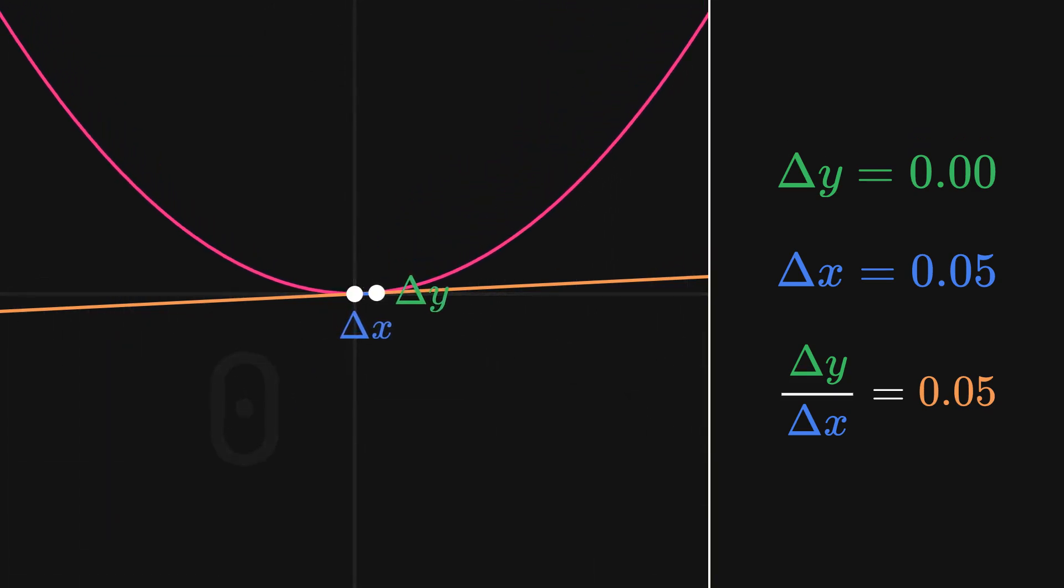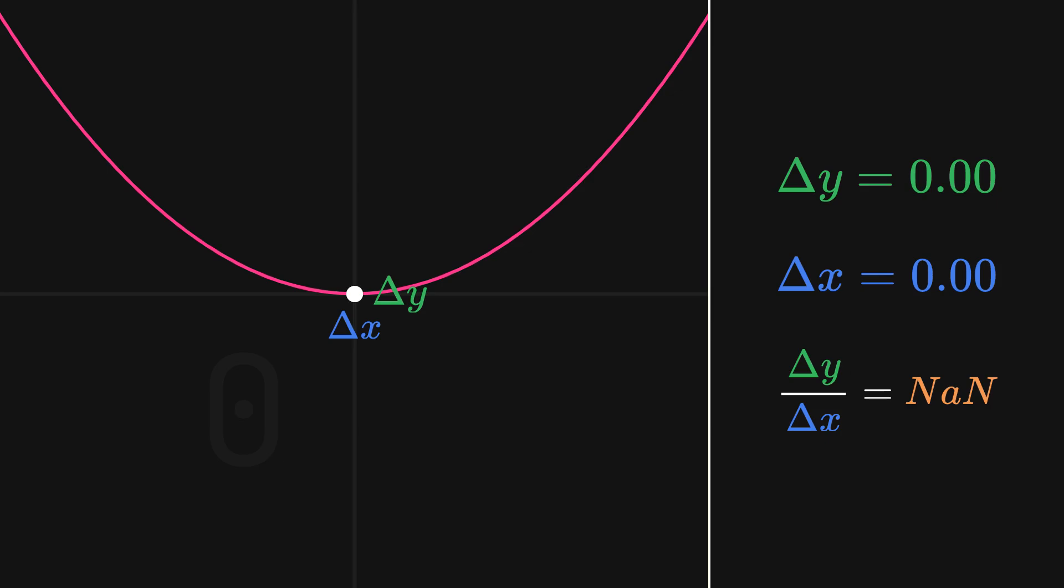But if we move B on top of A and make the distance between the two points zero, we can't calculate rate of change anymore because we would be dividing by zero, which is not possible.